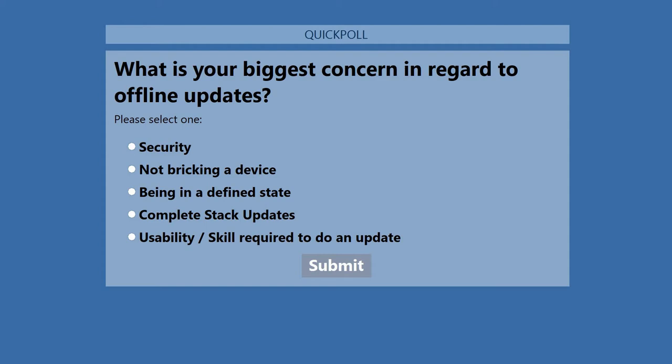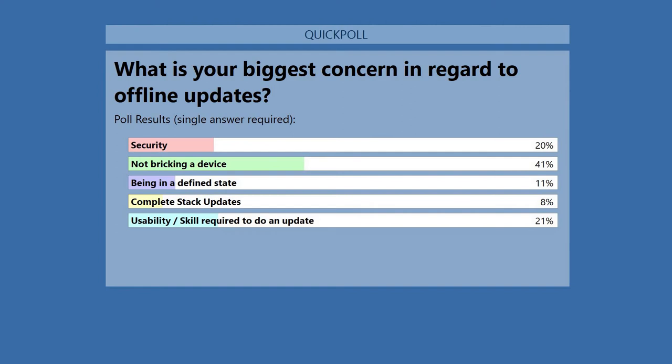Now I want to ask: what's the biggest concern for you regarding offline updates? Security? Not breaking the device — making sure it always functions? Being in an undefined state? Full stack — wanting to update everything not just the application? Or usability — maybe your end customer needs to do the update themselves? Looking at the poll results: not breaking the device came up most, followed by usability and security. That's really what we hear a lot from customers — their products are on factory lines or railway infrastructure where downtime is extremely expensive.